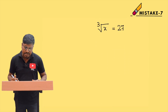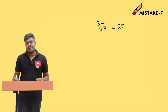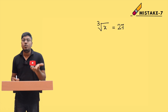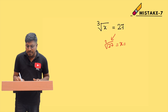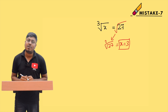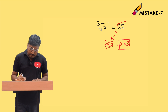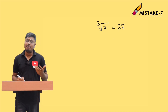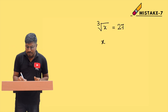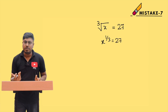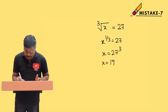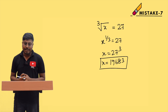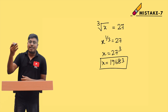The same logic applies to cube roots. For cube root of x equals 27, many students mistakenly find the cube root of 27 and say x equals 3 — that is wrong. Instead, remove the cube root: write it as x to the power 1/3 equals 27, then x equals 27 cubed. 27 cubed equals 19,683, so x equals 19,683.